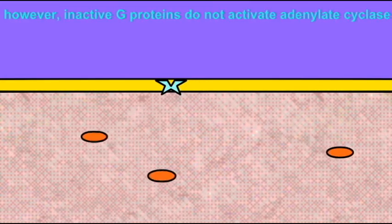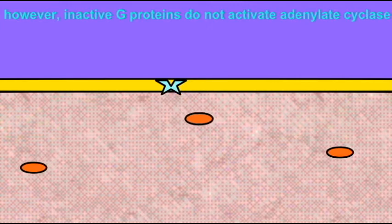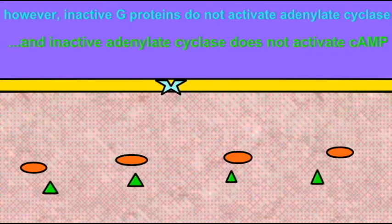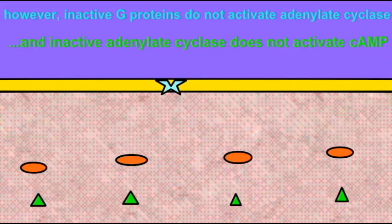In this illustration, the G-protein coupled receptor has not bound its ligand and the G-protein has not been activated. As a result, adenylate cyclase has not been activated and the second messenger cyclic AMP is not being made to initiate changes in the cell.